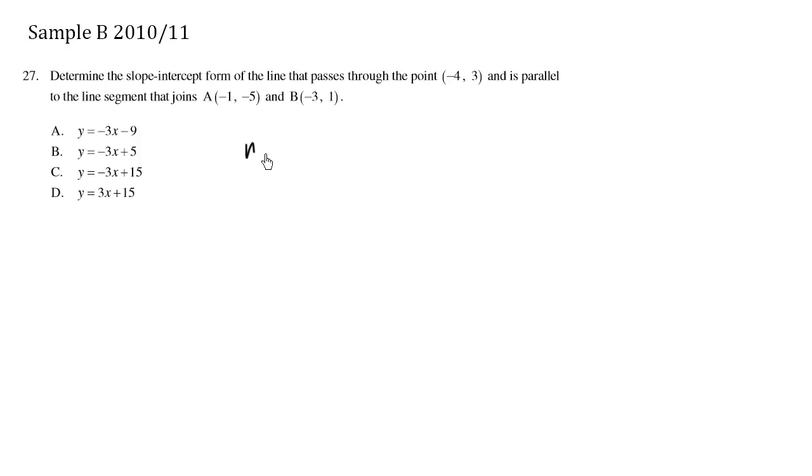We know that slope equals y2 minus y1 over x2 minus x1. We have x2 here, we have y2 here, and we have x1, y1 over here.